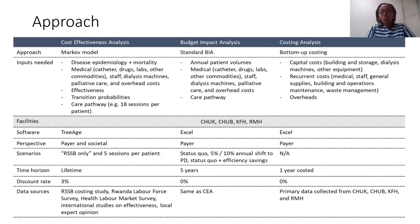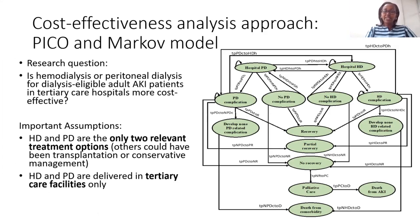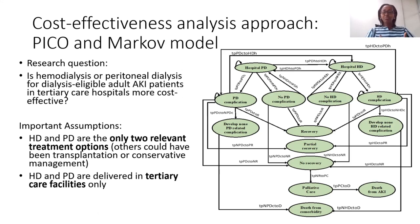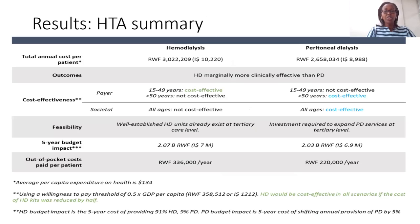The question at stake was: is hemodialysis or peritoneal dialysis for dialysis-eligible AKI patients more cost effective? We had shared the experience of various countries where PD could be a solution, but was it applicable in Rwanda? An important assumption was whether there were only two relevant treatment options available and whether PD could be delivered both in the facility and in the community, though we mainly stuck with analyzing what can be done at facility level.